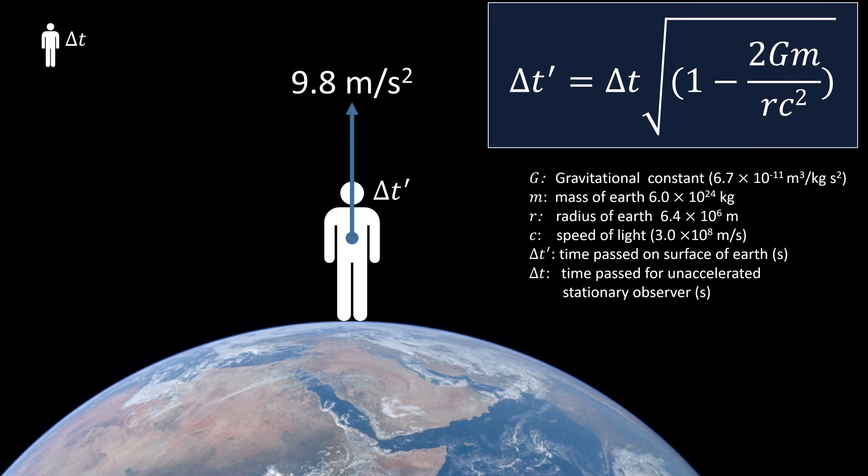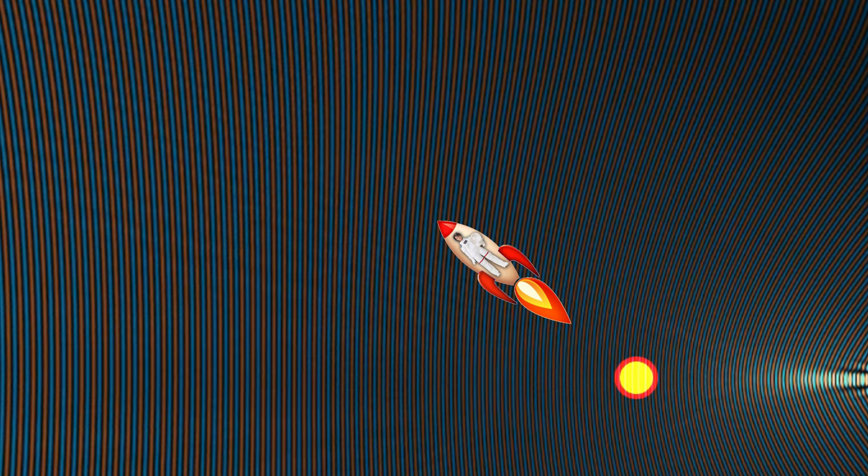And this is equivalent to the time slowing down by 7 times 10 to the minus 8 percent. And that is how much time runs slower on the surface of earth due to an acceleration of 9.8 meters per second squared. Now imagine what kind of acceleration it would take not to slow down time by only 60 microseconds per day, but by half a second per second. I am afraid that under these circumstances Samantha would find operating the measurement equipment a bit of a challenge.